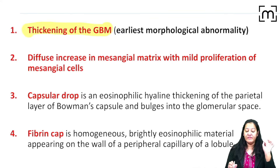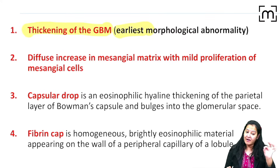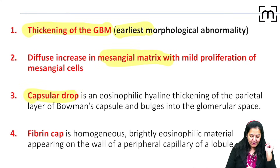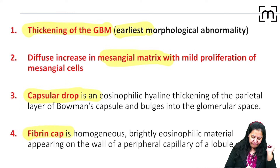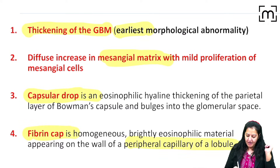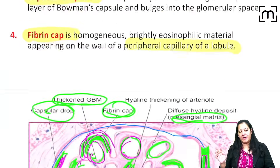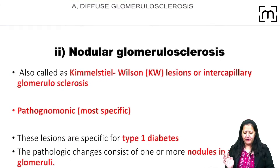To summarize the diffuse type: the earliest change is thickening of the basement membrane. Hyaline is also deposited in the mesangial matrix, in the Bowman's capsule as capsular drops, and peripherally over capillaries as fibrin caps forming lobules.